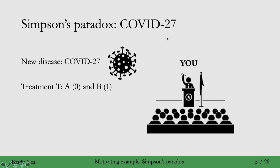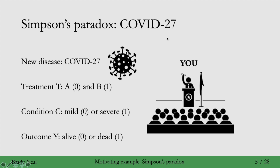An important thing about these two treatments is that treatment B is much more scarce than treatment A. You're getting data from your doctors in your country — they're administering treatments and collecting data on what happens. Another thing you have data on is the condition of each patient, whether they come in with a mild or severe condition, coded as 0 or 1. And finally there's the outcome Y — your patients will either be alive or dead. We're only looking at binary variables here, though in causal inference you can extend analysis to continuous variables or multiple outcomes.